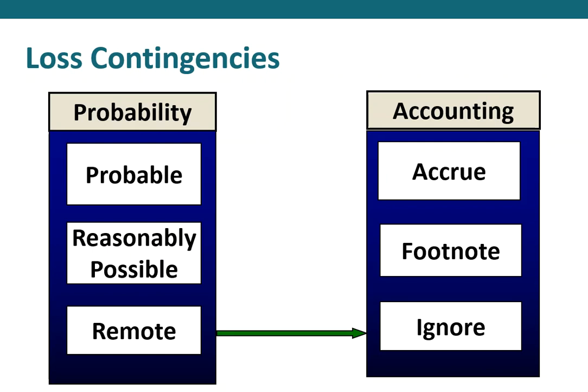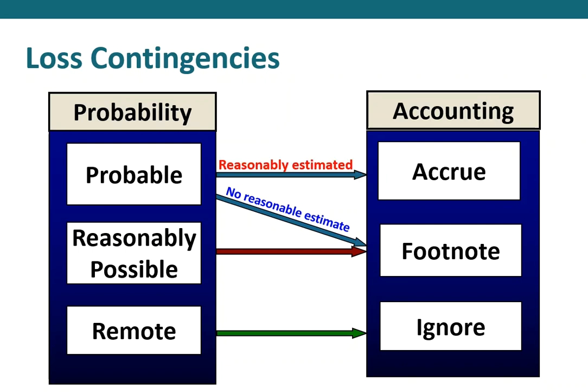If it's remote, we ignore it — no footnote, no number on the financial statements. If it's reasonably possible, meaning not probable but greater than remote, we disclose the loss contingency in our footnotes. If it's probable — greater than 50% — and we can't come up with a reasonable estimate, we disclose it in the footnotes. But if we can come up with a reasonable estimate, we will accrue the loss and record the liability on our balance sheet.